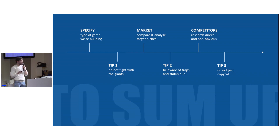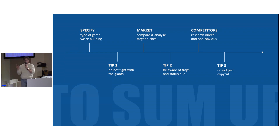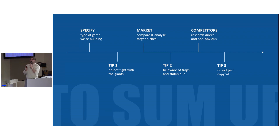To sum it up, when developing a new game and evaluating game ideas: the first step should be identification — understanding the specific type of game you're building. It's really important not to fight with the giants because of survivorship bias and unequal conditions, and remember to look for hidden gems in your niche. Secondly, compare and analyze different target niches and markets, and be aware of traps and status quo. When you don't have a strong IP, unique expertise in the niche, or broad expertise in gaming in general, it's not the best idea to address trap markets. And last but not least, research your direct and non-obvious competitors — work with them, love them, and they will help you. But do not just copycat. Use analytics, statistics, and data from the market in order to gain success.